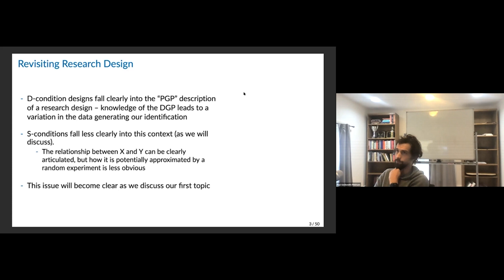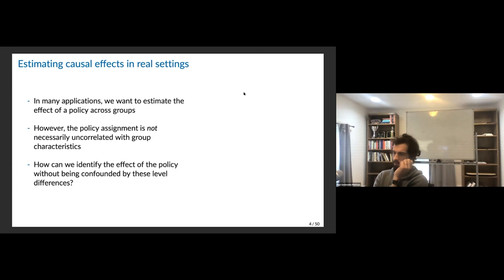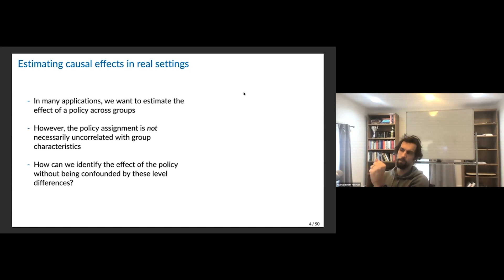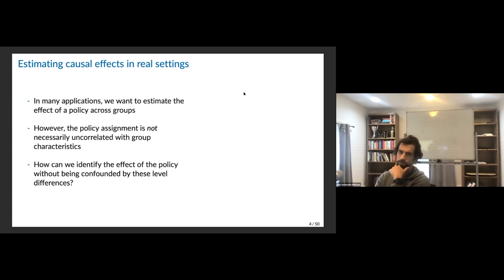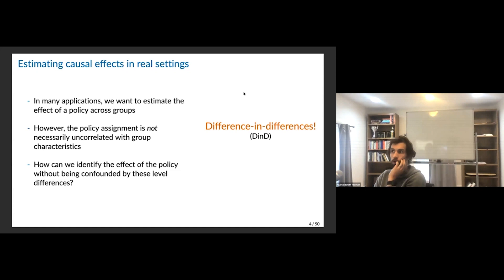So what do we want to do? To give the full-throated best explanation of why you'd want to study difference-in-differences: in many applications, you want to estimate the effect of a policy across groups, but the policies just aren't uncorrelated with group characteristics. There are some groups who get targeted and others who don't, and there are good reasons one group is targeted versus another. The question is how do you identify the effect of the policy without being confounded by these level differences? Difference-in-differences is the workhorse for thinking about this.